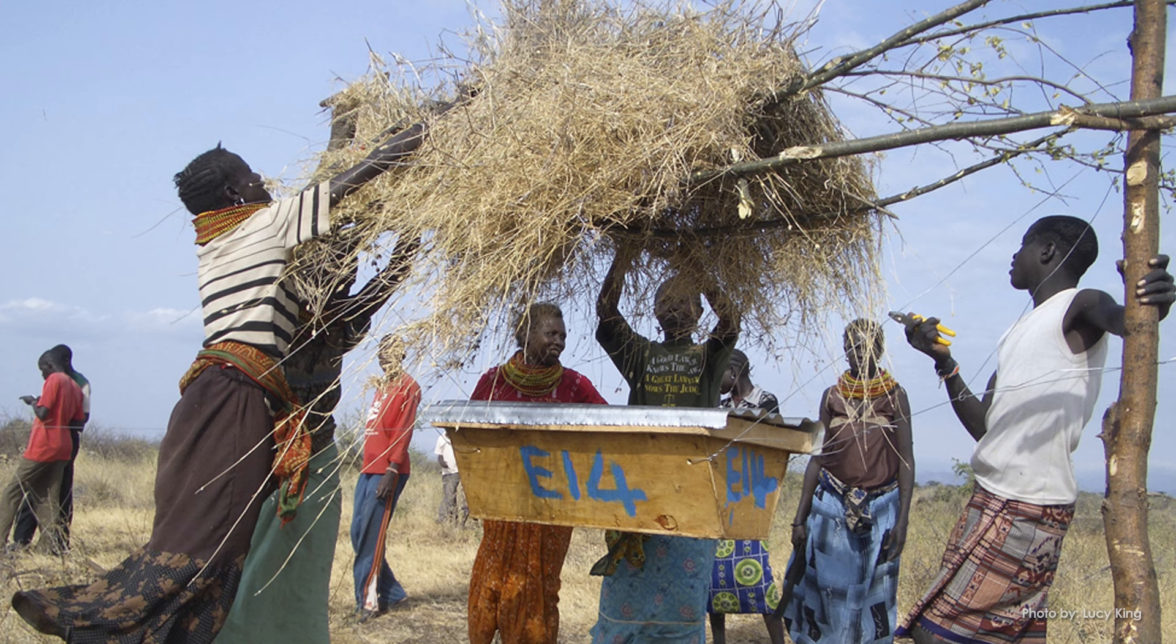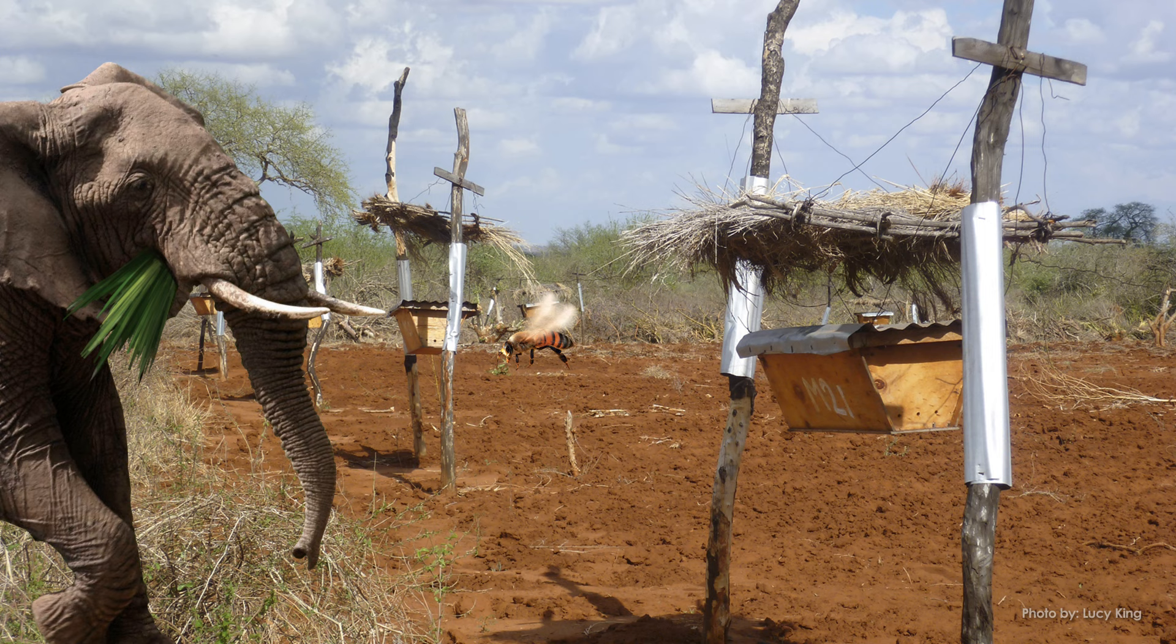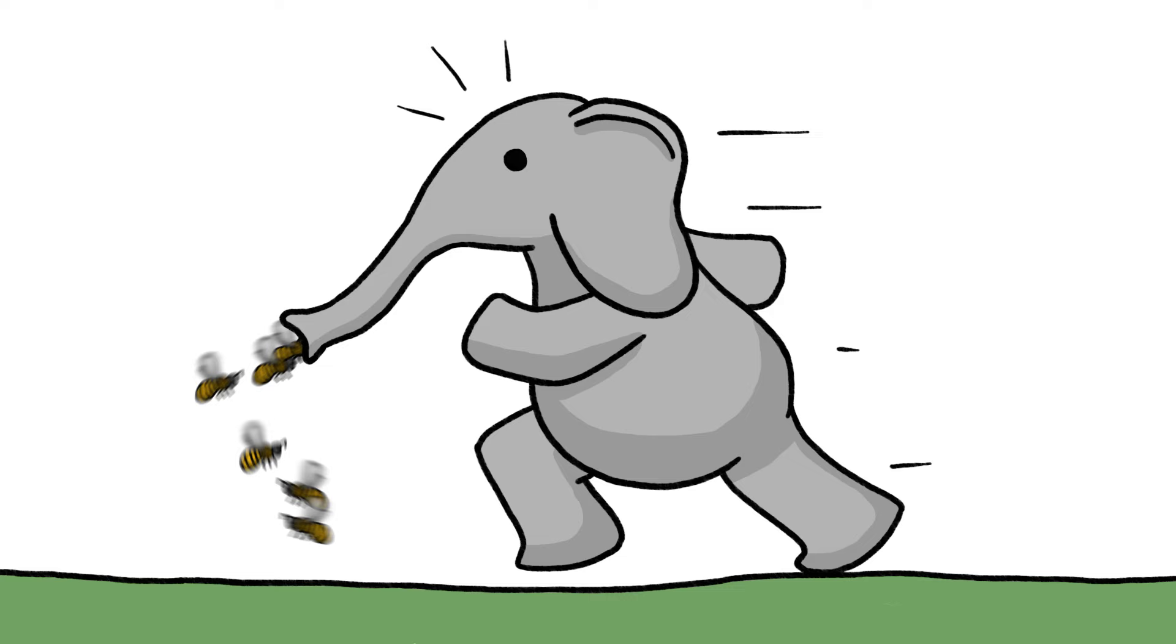In East Africa, for example, farmers are building beehive fences to keep out crop-raiding elephants. Nothing, it turns out, makes these five-ton behemoths turn and run faster than a buzzing bee. Nobody likes a bee in their nose, and elephants have the biggest noses.